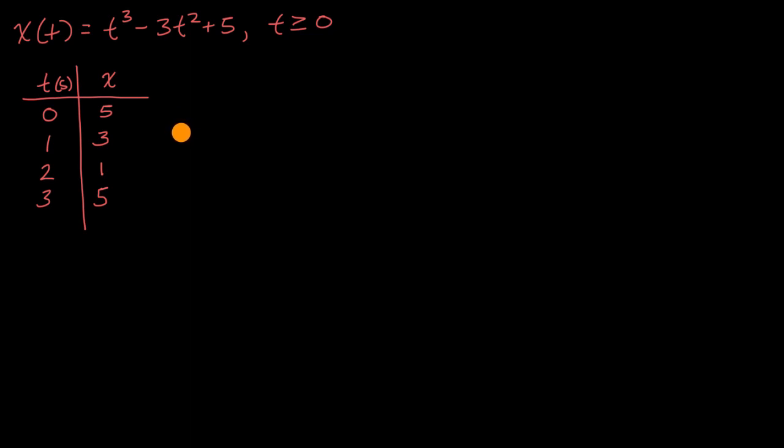So let me draw our positive x-axis. So let's say it looks something like that. This is x equals zero, this is our x-axis, x equals one, two, three, four, and five.